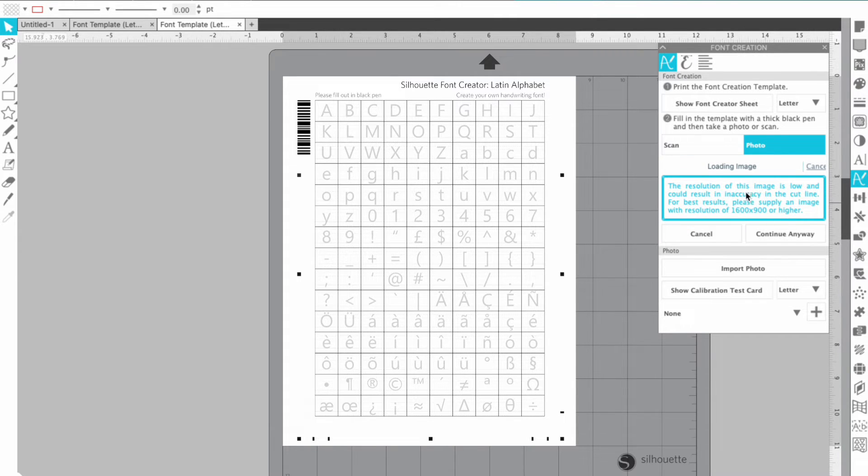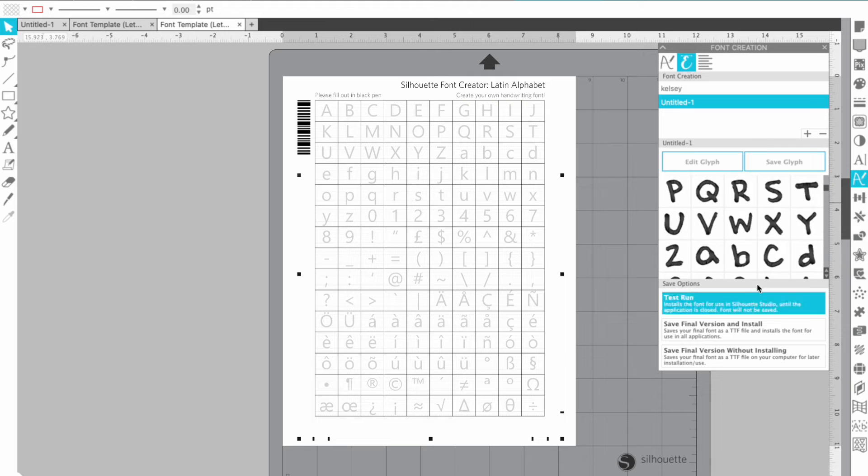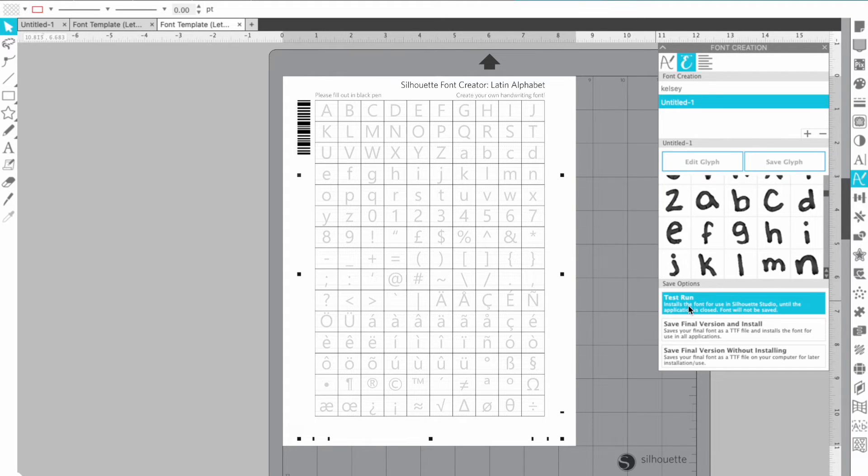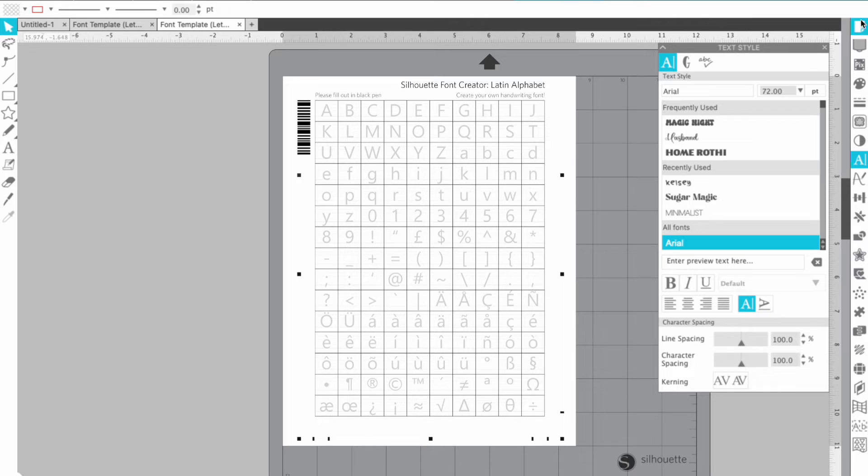And you can I also got this the first time too and I just hit continue anyway and it worked just fine and there's my font and that's that's truly it that's all you have to do so you can do a test run and that will just install the font onto silhouette studio until you're done using it so you see I already have my one font up here so I'm going to name this um this one Kelsey too so I can do a test run right on here and just hit test run and it's been saved into my font.